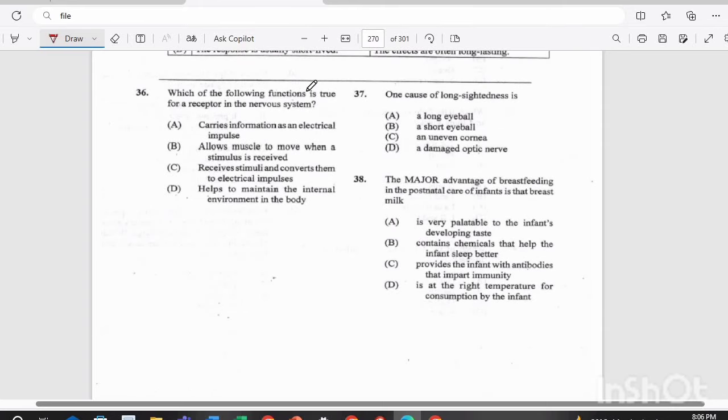Question 36. Which of the following functions is true for a receptor in the nervous system? Is it A, the receptor carries information as an electrical impulse? B, the receptor allows the muscles to move when a stimulus is received? C, the receptor receives stimuli and converts them to electrical impulses? Or D, the receptor helps to maintain the internal environment in the body? Answer there is C.